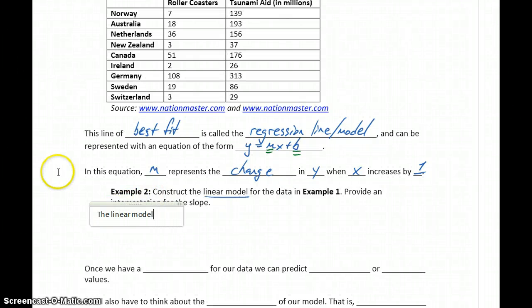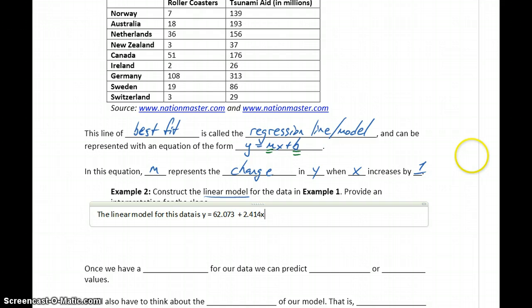So the linear model, or the regression model, for this data is y equals 62.073, plus 2.414x. So that's our linear model.